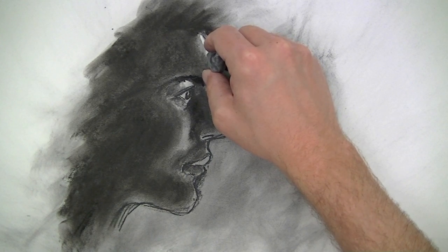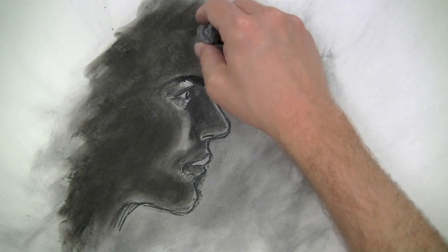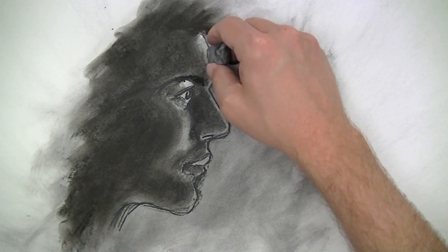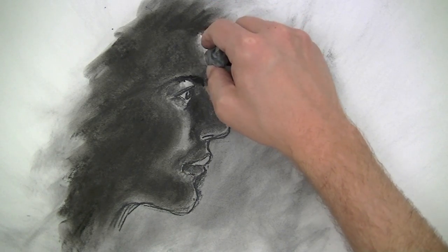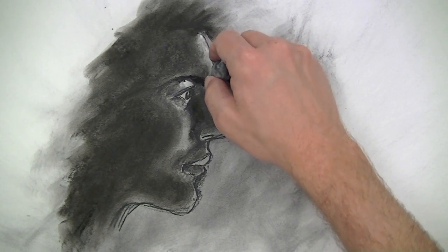All right now we can go back with the kneaded eraser and start to erase out some of the areas of highlight and this is going to really increase the contrast and make the illusion of light come together a little bit more.